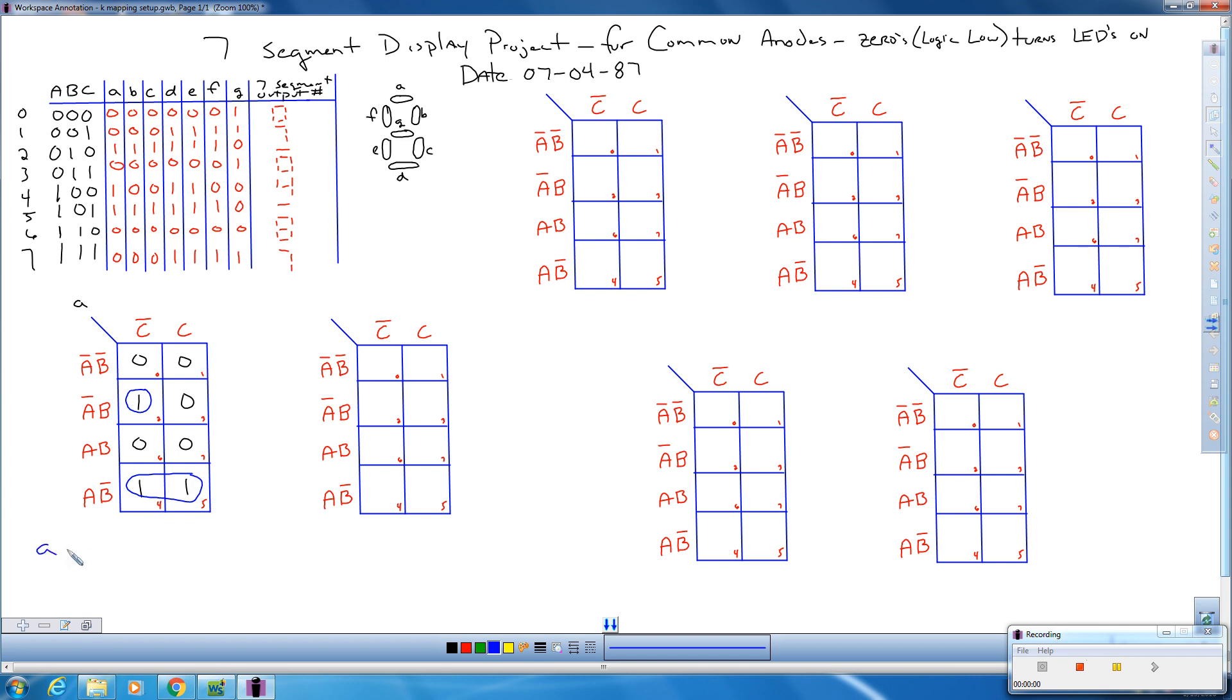Alright, so segment A ends up becoming, right here we have not A, B, and not C. So we have A bar, B, C bar. Or, down here, we don't care if it is C bar or C, but we do care that it is A and B bar.